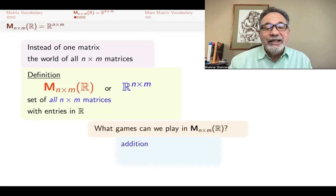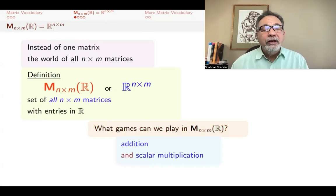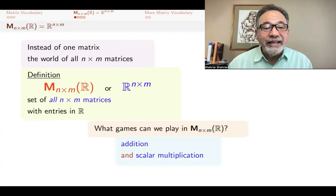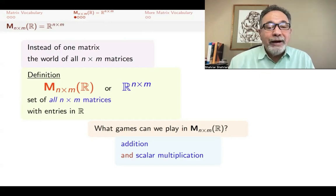What we are interested in is addition and scalar multiplication, because those are the operations in a vector space. We have seen similar examples for R^n, n-tuples, as well as polynomials, and we now want to see that with n by m matrices, we can do the same things.